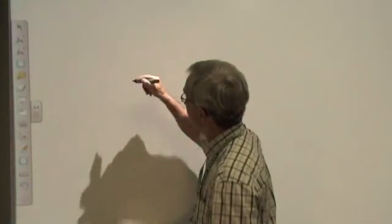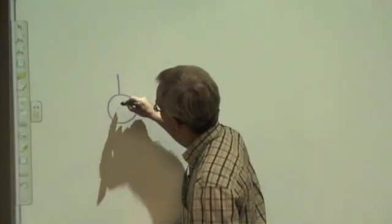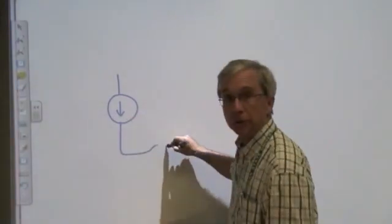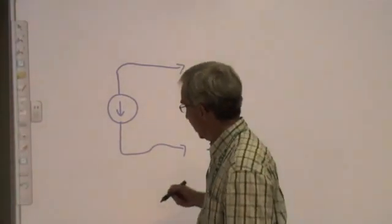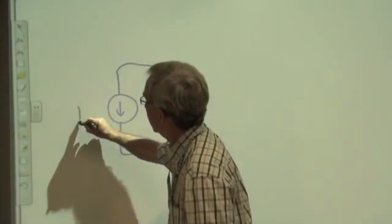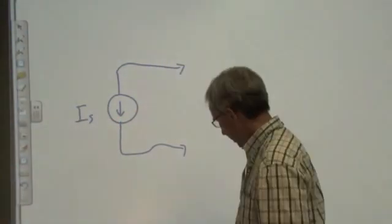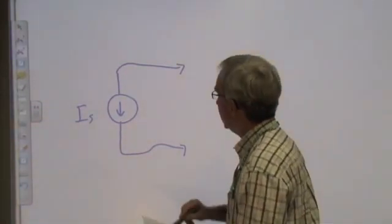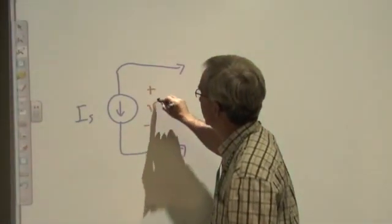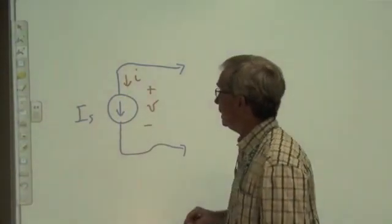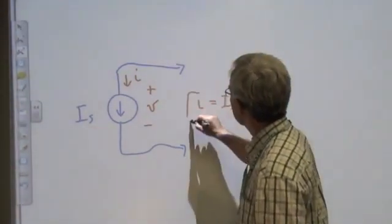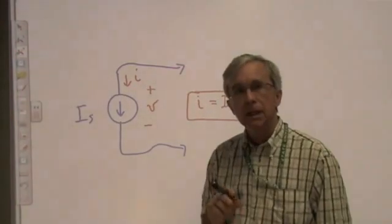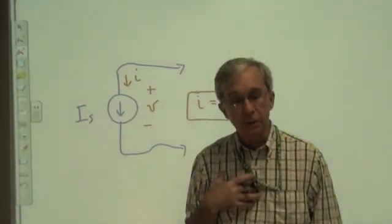Another important ideal circuit element is the ideal current source. We start with the circle for the symbol, with an arrow designating a current direction. It will have a value, I sub S. In this case, the constraint is simply that I is going to be equal to I sub S, regardless of how it's connected to the rest of the circuit. That's the constraint that the ideal current source has.